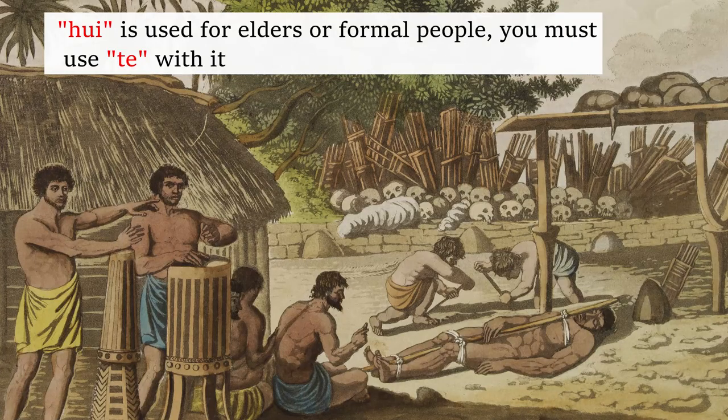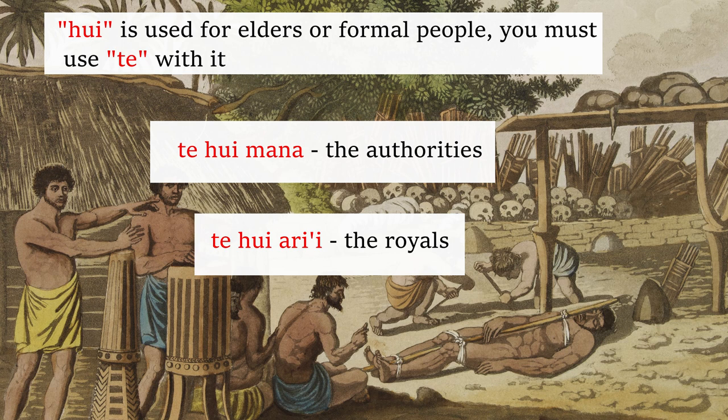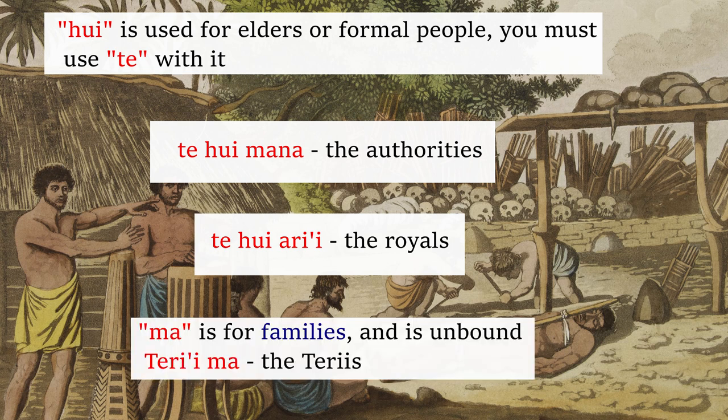Articles for animals, people, and objects get much more specific. Bound articles include 'hui,' which is used for elders or formal people — you must use 'te' with it. Te hui mana — the authorities. Te hui ari'i — the royals. And lastly, 'ma' is for families and is unbound. Te rima — the families. There are many more definite and indefinite article forms that can be bound or stand alone in Tahitian, but we're not going to touch on all of them today.